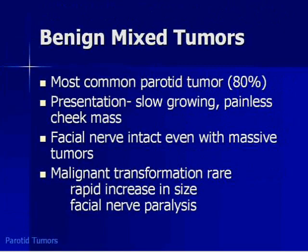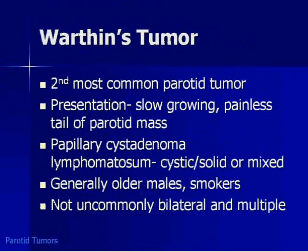This is the most common tumor of the parotid gland. If you see a well-defined solitary lesion in the parotid gland, even if you don't look beyond it being well-defined, if you guess benign mixed tumor, you'll be right most of the time. These tumors are slow-growing and painless, presenting as a cheek mass. Even if they get really big, the facial nerve should be intact. They can have a malignant transformation — which is rare — but you suspect it when you see rapid increase in size and/or facial nerve paralysis.